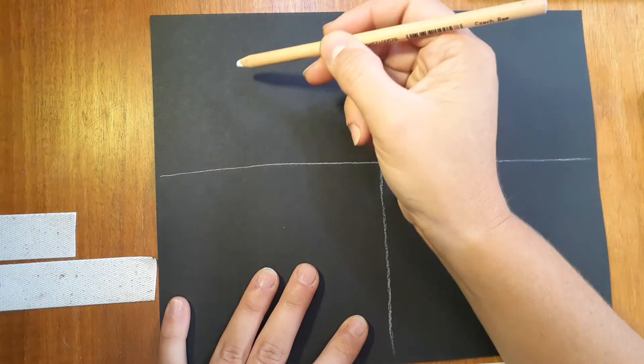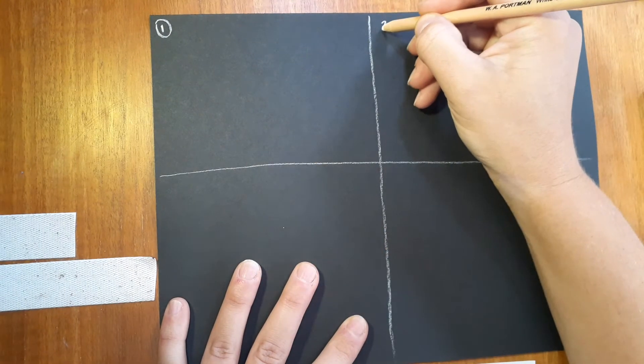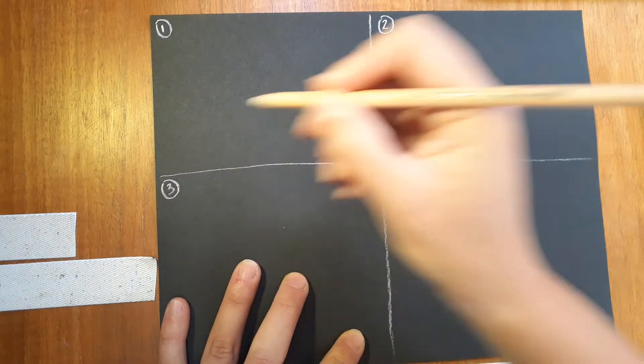So in our first section up here, let's just put a little number one to help us stay organized, and then a number two and number three as we come down, and a number four.